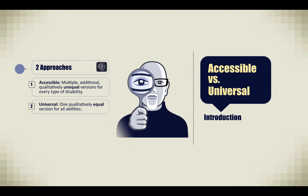I'll be addressing two approaches. First, accessible design: multiple additional qualitatively unequal versions for every type of disability. And second, universal design: one qualitatively equal version for all abilities.